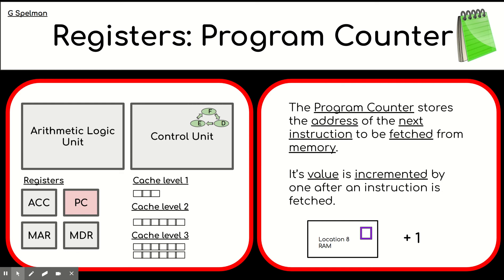Program counter. Now, the program counter, again, contains every one of these registers. It contains something. It stores something. That's the purpose to store. So the program counter stores an address. And the address that it has is the address of the next instruction to be fetched.